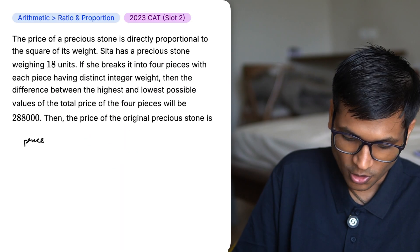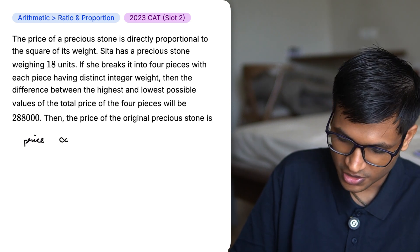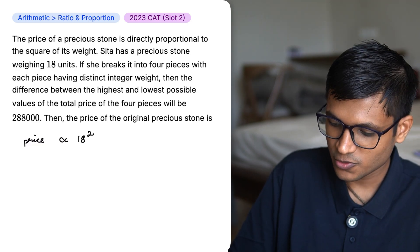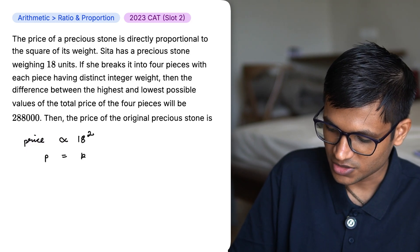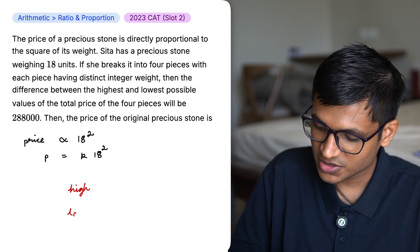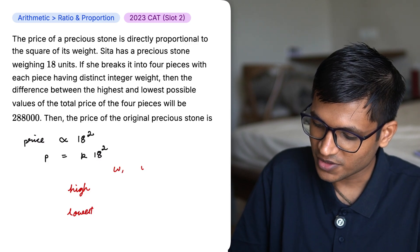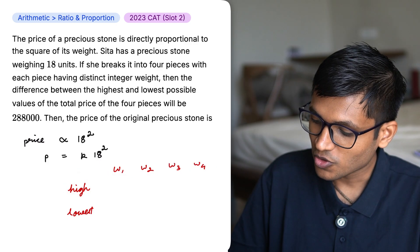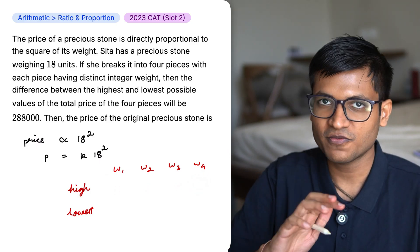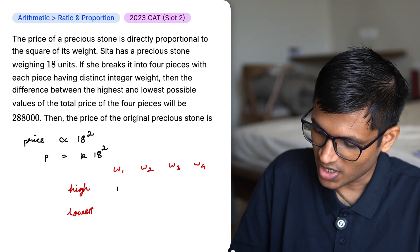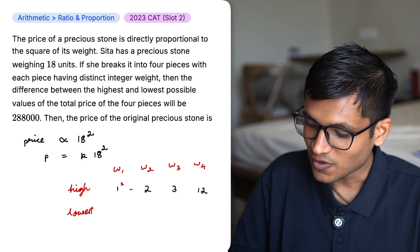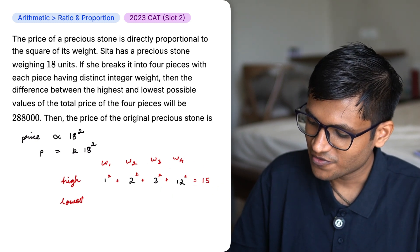The price of a precious stone is directly proportionate to the square of the weight. Sita has a precious stone weighing 18 units. If I want to convert this into an equation, I put a constant over here. If she breaks this 18 gram gem, so she can have the highest cost and the lowest cost if I break it in 4 different pieces. If I want the highest cost, I would want one of the weights to be as big as possible and the remaining to be as small as possible because I'm working with squares. Let me just try putting 1, 2 and 3. So I already have 6 grams here. 18 minus 6 is 12 grams. If I add all these squares, I get 158k.